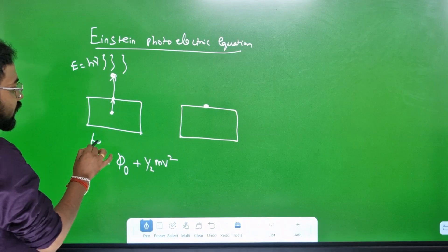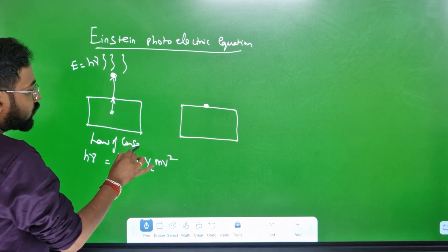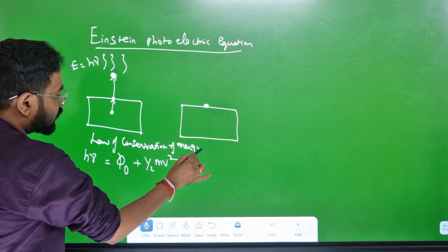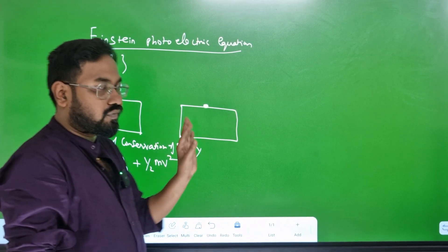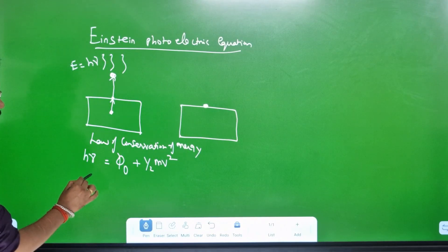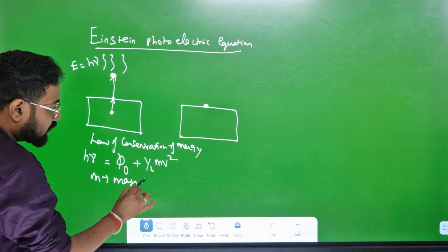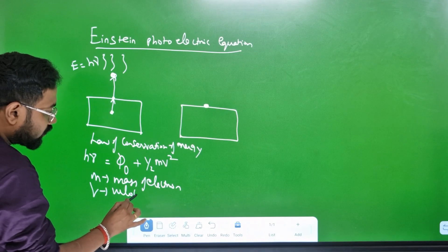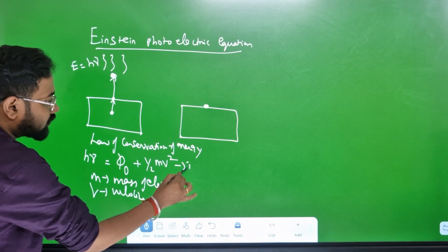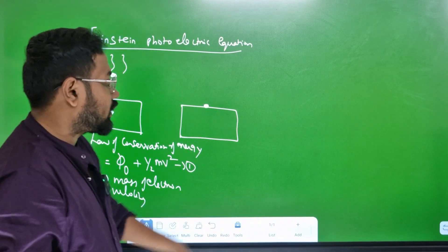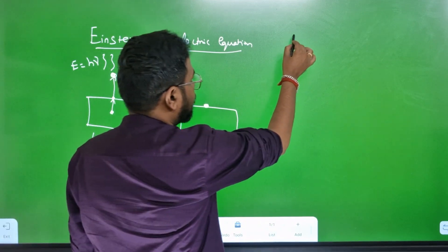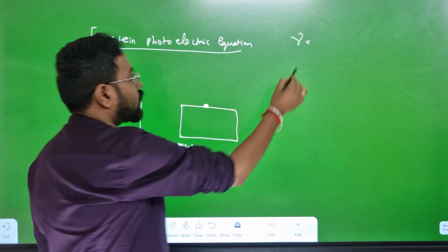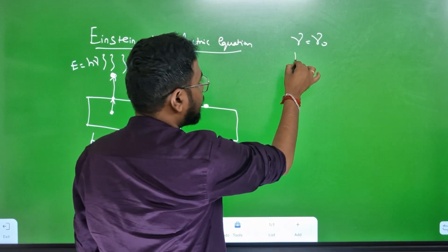According to the law of conservation of energy, the mass of the electron is m and the velocity is v. This gives us the first equation. The second equation involves the threshold frequency nu. The incident frequency is nu, and when kinetic energy is zero, E is equal to phi naught.